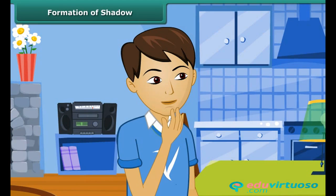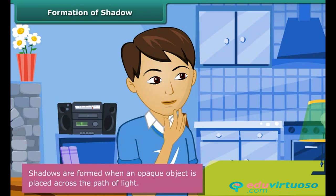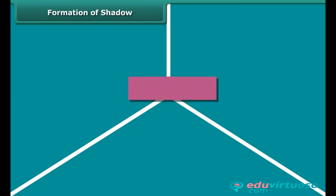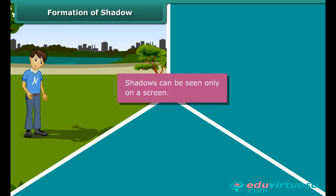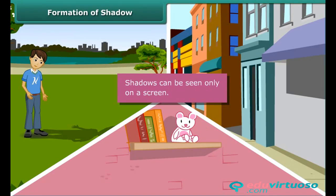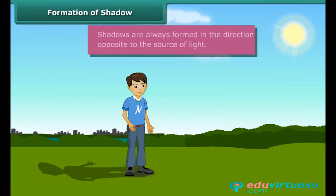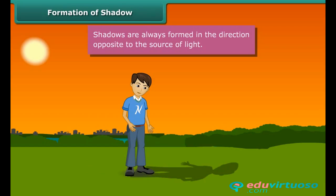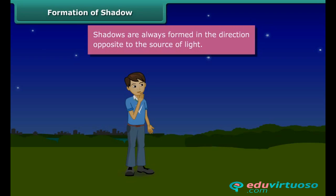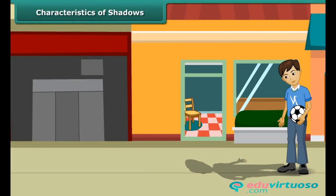You want to understand when shadows are formed and in which direction. Shadows are formed when an opaque object is placed across the path of light. Shadows can be seen only on a screen; the ground, walls of a room, buildings, and other surfaces act as screens. Shadows are always formed in the direction opposite to the source of light. In the morning, facing the sun, your shadow was behind you; in the evening, the sun behind you caused the shadow to form in front. When the sun set, there was no light and hence no shadows.